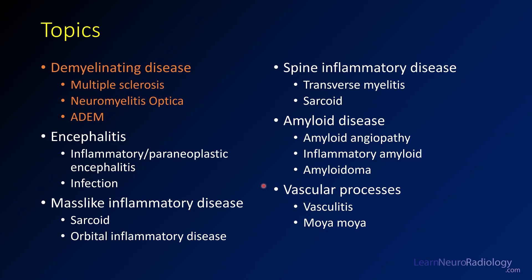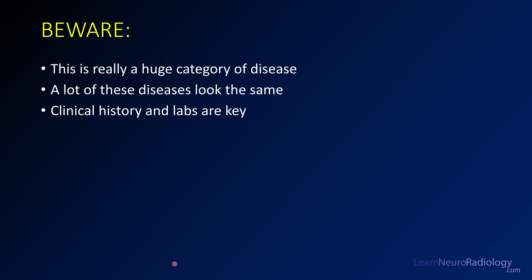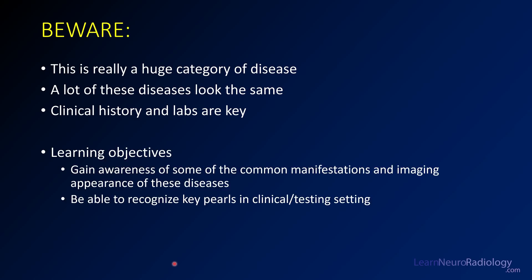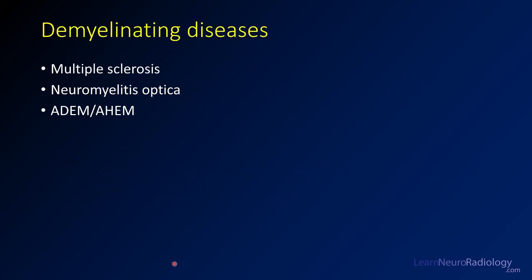Without further ado, we're going to drop right into demyelinating disease. A warning: CNS inflammatory and autoimmune diseases is a huge category, and many of them look the same — the clinical history and labs are really what will set them apart. Also, this is not intended to be comprehensive; it will focus on the most common diseases and key pearls for clinical testing.